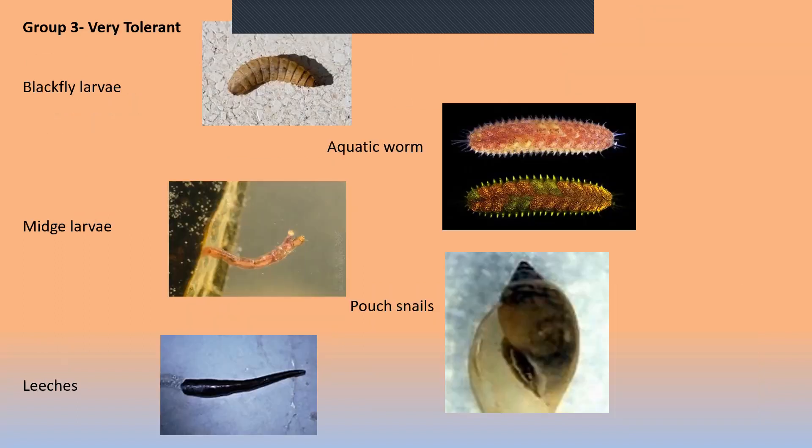Group three organisms are very tolerant of pollution. On the top, we have the black fly larvae — black flies are basically different species of house flies and deer flies, so these are essentially maggots that live in the water. To the upper right, we have aquatic worms — types of worms that spend their entire lives in the water, usually in streams.